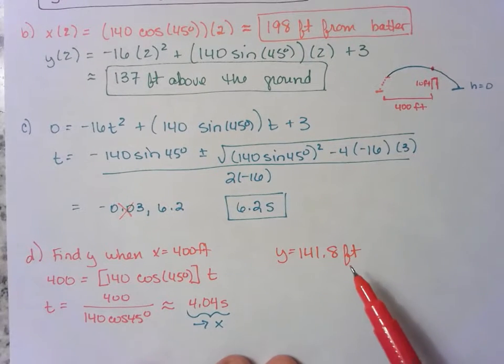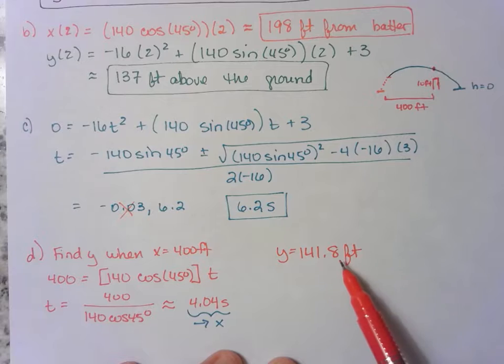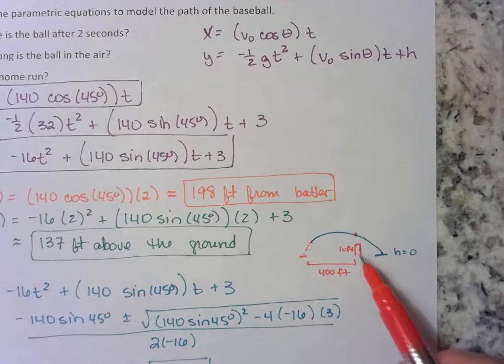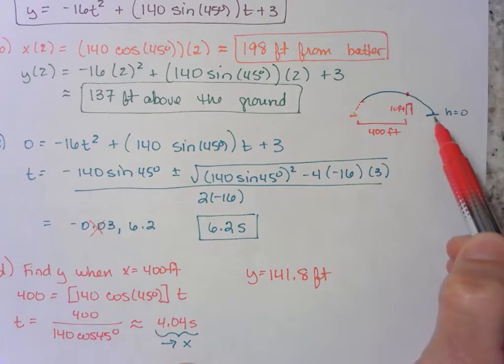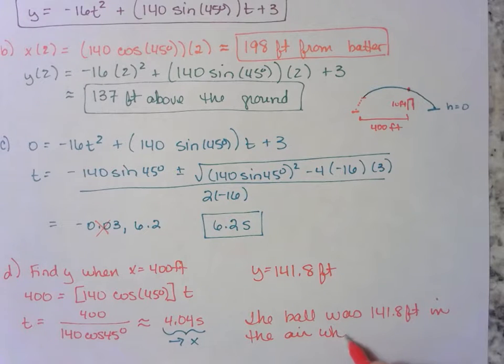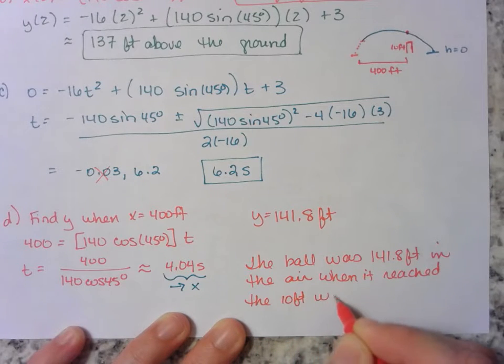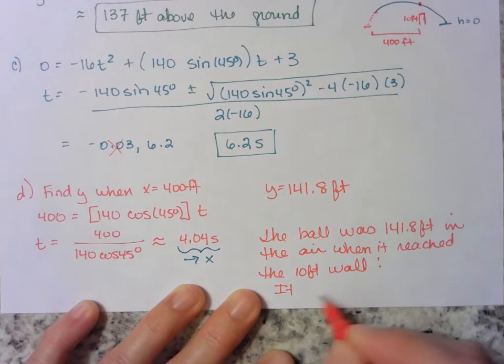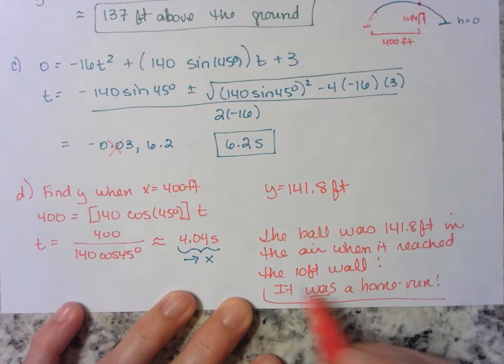Now what does that mean? Remember that this is the vertical distance or the distance in the air from the ground, right? So that's how tall this ball is once it reaches the wall. The wall is only 10 feet high. So if the ball is 141 feet in the air, it definitely cleared the wall, which means it soared right over and made it a home run. That means they won the game, woohoo!